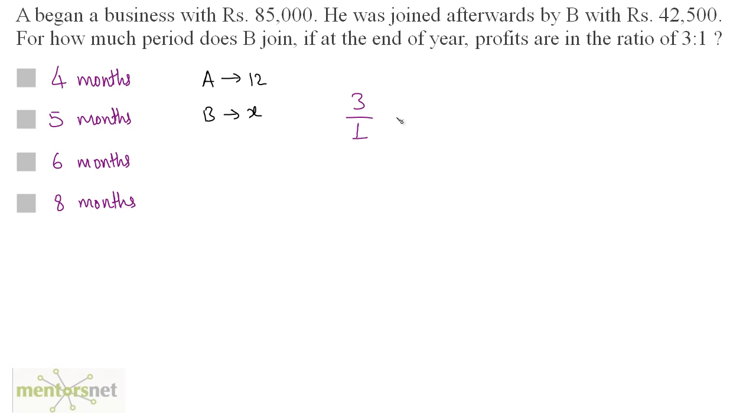So 3:1 equals the amount invested by A, 85,000 times the time period of A which is 12 divided by amount invested by B, 42,500 times X which is the time period of B.